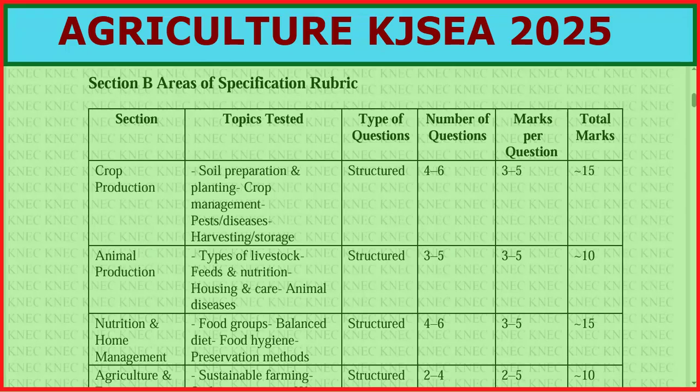Then we have nutrition and home management — remember, agriculture involves both agriculture and nutrition. Topics include food groups, balanced diet, food hygiene, and preservation methods. These are structured questions, four to six questions, each three to five marks, giving us 15 marks.